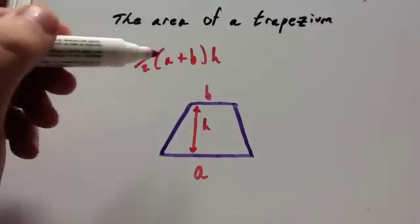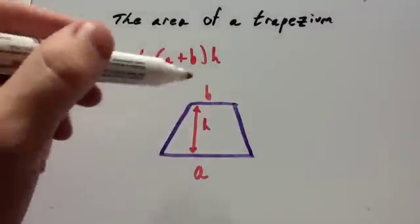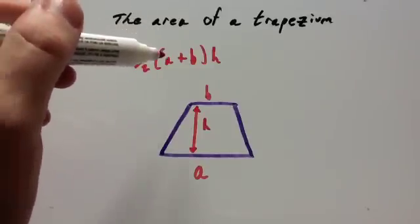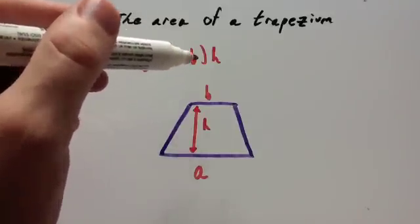Okay, we're now going to look at how to find the area of a trapezium. Okay, so if you got a trapezium, to find the area of the trapezium, you use the formula one-half A plus B and then times by the height.